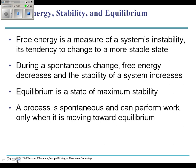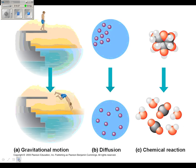Free energy is a measure of a system's instability, its tendency to be able to change to a more stable state. During a change, free energy decreases and stability increases, which kind of makes sense. Things want to be or things move to stability. Equilibrium is a state of maximum stability. When nothing's happening in the system, you're getting no change in energy. A process is spontaneous and can perform work only when it is moving toward equilibrium.